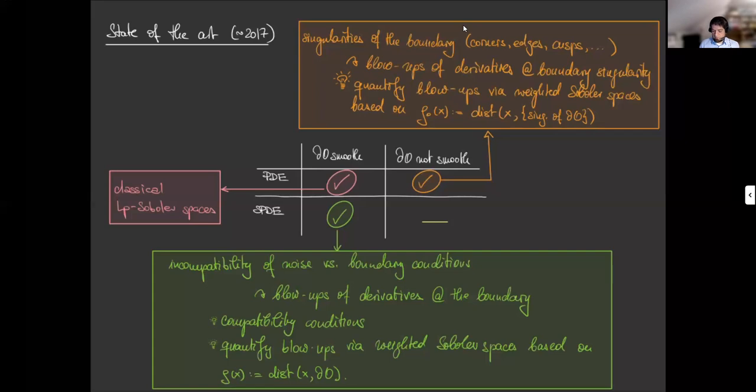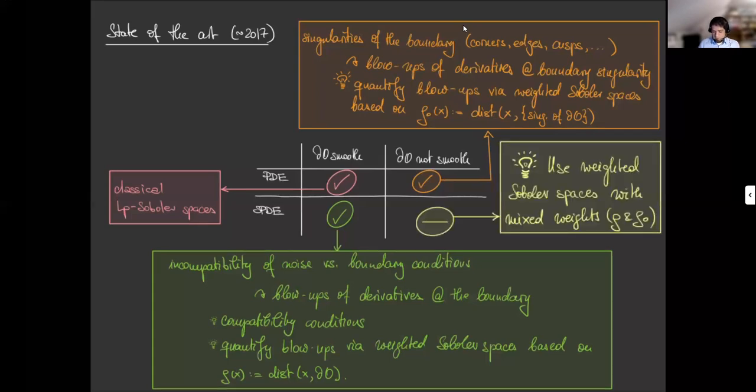And the idea was to make them sharp by introducing weighted sobolev spaces with mixed weights. So we use both weights based on the distance to the boundary and on the distance to the singularities of the boundary, and to find a way to define the weights in such a way that we capture exactly what happens with the stochastic heat equation there.